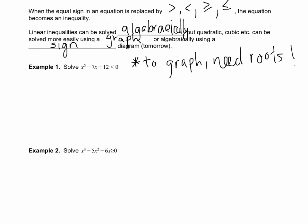x² - 7x + 12 is going to factor to (x - 4)(x - 3) < 0. That means then that we have a root at x - 4 = 0 or x = 4, and we have our second root x - 3 = 0 or x = 3.